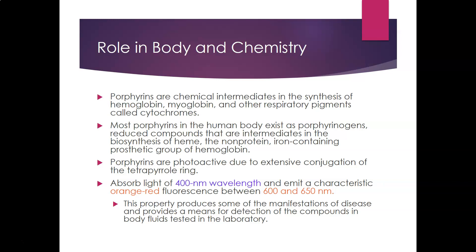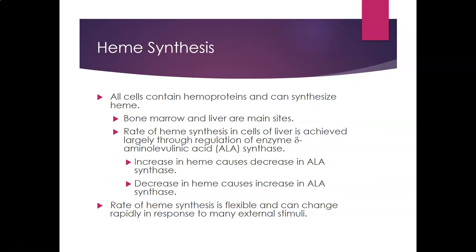All cells contain hemoproteins and can synthesize heme, but the primary sites are bone marrow and liver. The rate of heme synthesis in liver cells is regulated by the enzyme delta-aminolevulinic acid synthase, or delta-ALA synthase. If heme is in excess, ALA synthase is decreased because no more is needed; if heme is decreased, ALA synthase increases to produce more. The rate of heme synthesis is flexible and can change rapidly in response to external stimuli such as blood loss.